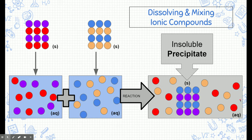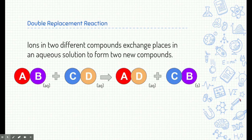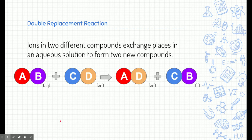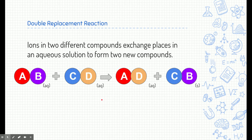This is called a double replacement reaction. We have compound AB (aqueous) and compound CD (aqueous). When mixed, they exchange partners: A goes with D and C goes with B — positive and negative ions meet up. Ions in two different compounds exchange places in an aqueous solution and form two new compounds. Some of those compounds will remain soluble and some will become insoluble.